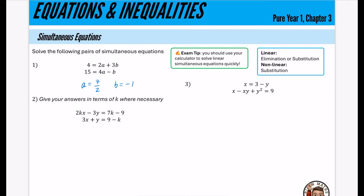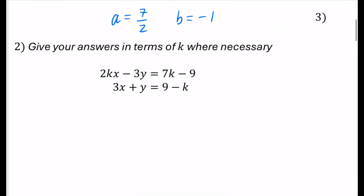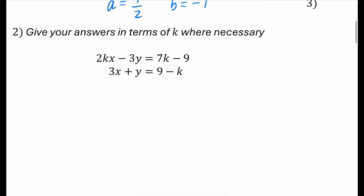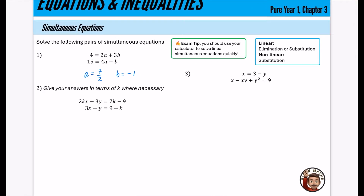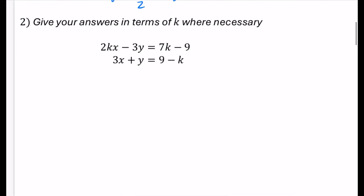For question two, we're going to solve this pair of simultaneous equations. However, we can't type this into the calculator because we have these unknowns — there's an extra K as a constant. As a quick reminder, for linear simultaneous equations, we should either do elimination or substitution. I'm going to do this one using elimination, but remember you could also use substitution.